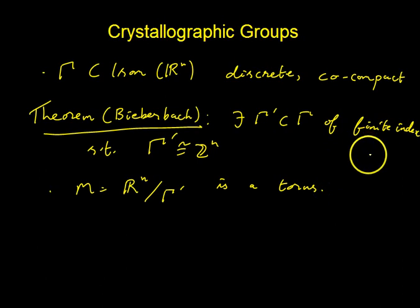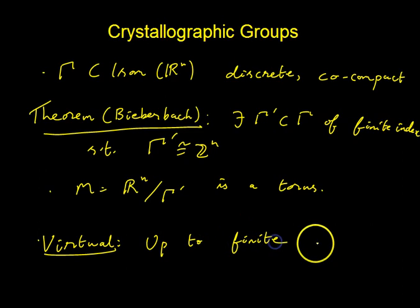Bieberbach's theorem tells you that if you take crystallographic groups—by the way, there are 230 of them in dimension 3—far fewer of them are actually free actions, but still there's a bunch of them. You can make tables of them and so on. So you don't get a nice statement about the crystallographic groups themselves, but if you pass to finite cover, you get a beautiful statement. That's what we aim for: virtual. By finite index subgroup corresponds to finite cover, virtual is up to finite cover or finite index subgroup. This is what I mean by virtual classification. So virtually, how do 3-manifolds look like?